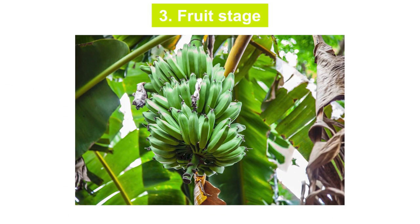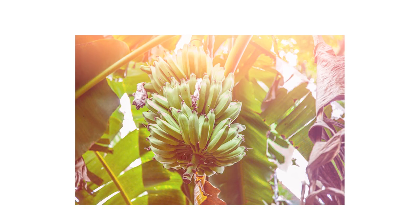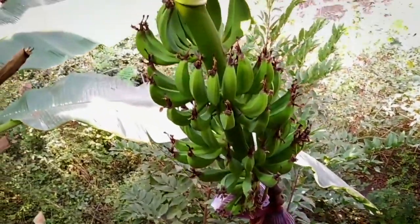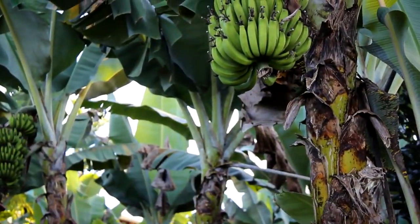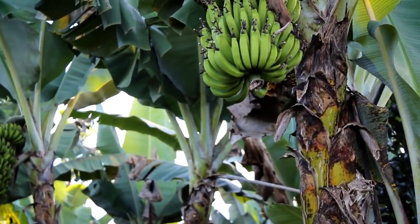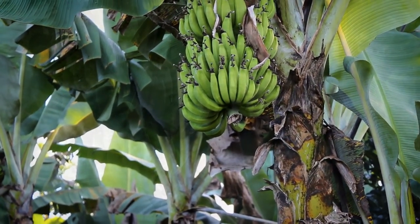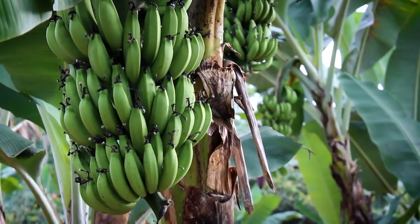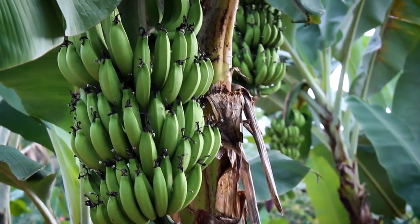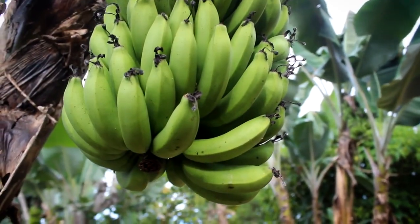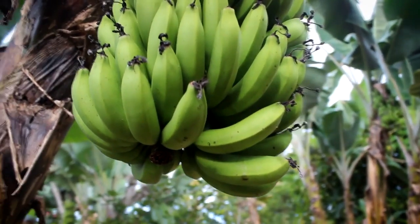Fruit Stage: After banana plants have bloomed, they will begin to produce fruit. It usually takes about 3 months for the fruit to fully develop. Banana plants can produce 200 or more bananas each, depending on the size of the plant. The fruit grows in large bunches with multiple rows of bananas called hands, and each hand can contain up to 20 bananas.